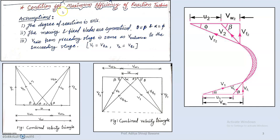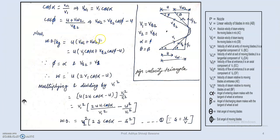Now let us go into the maximum efficiency case. Efficiency is work done divided by heat supplied. Here, work done is the rotation of the shaft and heat supplied is the change of enthalpy across a particular stage. Work done equals u times (vw1 plus vw2). For the inlet triangle, cos alpha equals vw1 divided by v1, so vw1 equals v1 cos alpha. For the outlet, cos phi equals (u plus vw2) divided by vr2, so vw2 equals vr2 cos phi minus u.